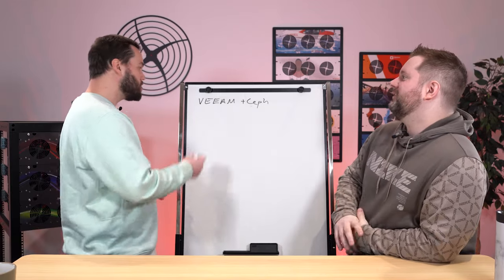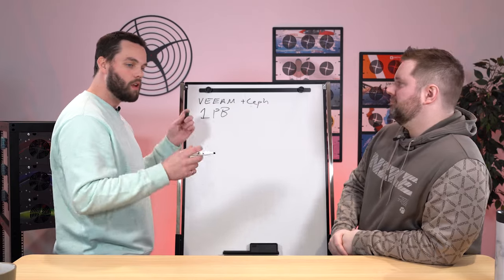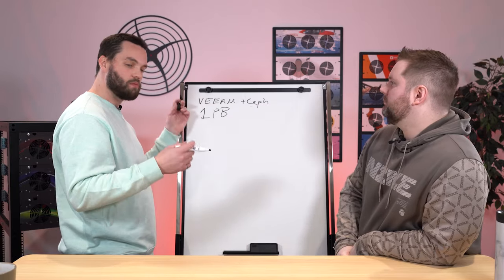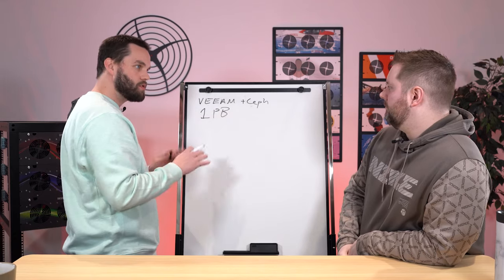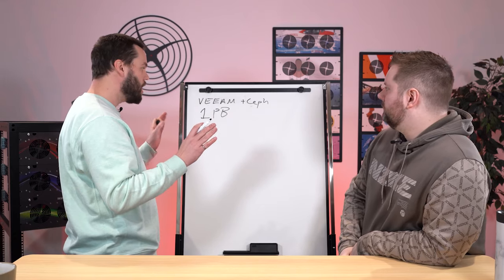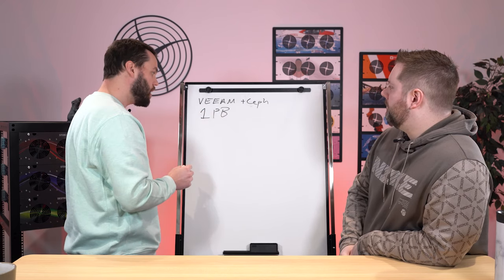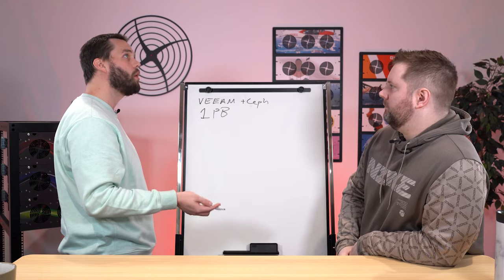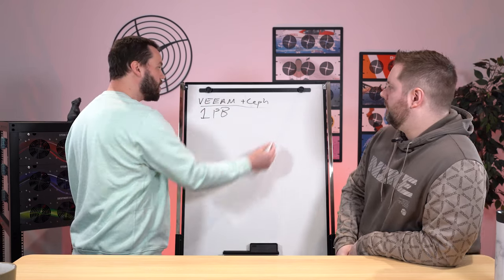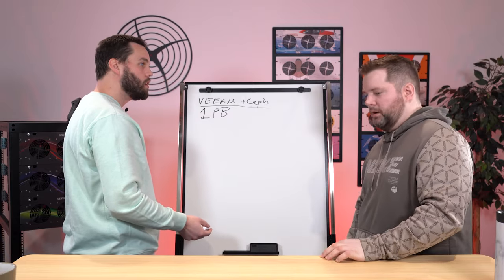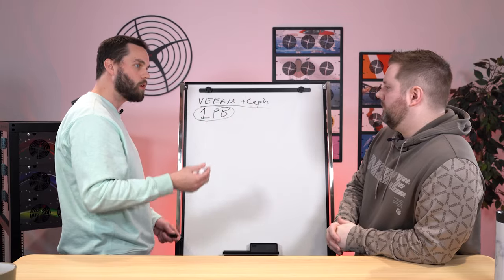Let's pretend we're one of those companies. I've done the math and decided I'm going to need one petabyte of data to start. I've talked to prospective customers — they're into it. I've already got my Veeam infrastructure set up. I need a cluster that does one petabyte. I know Ceph does object, file, and block — so how are we going to get Ceph to work with Veeam?